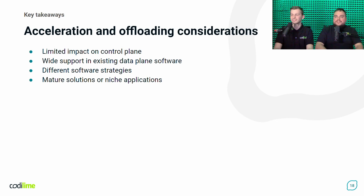So let's move to the takeaways for our webinar. What are the considerations for acceleration and offloading? Hopefully we have shown you that for hardware offloading there is unlimited impact on the data plane. Really, usually you don't need any input from the host CPU at all — that's because we are using the SDN approach. On the other hand, in terms of software data plane, there is support from Open vSwitch and other projects for hardware offloading — Tungsten Fabric or VPP are examples. And hopefully we have shown you that there are both different strategies, and in terms of hardware there are mature solutions such as conventional NICs, or you could create your own hardware solution for niche applications.